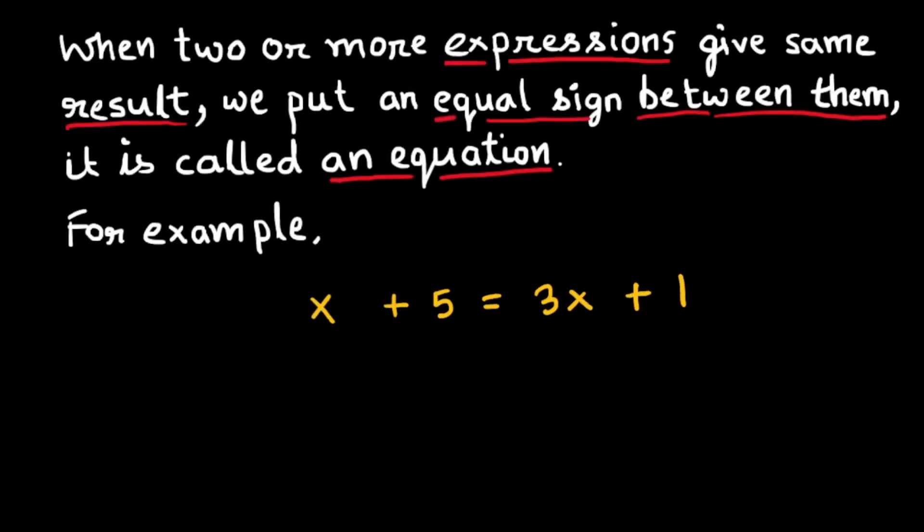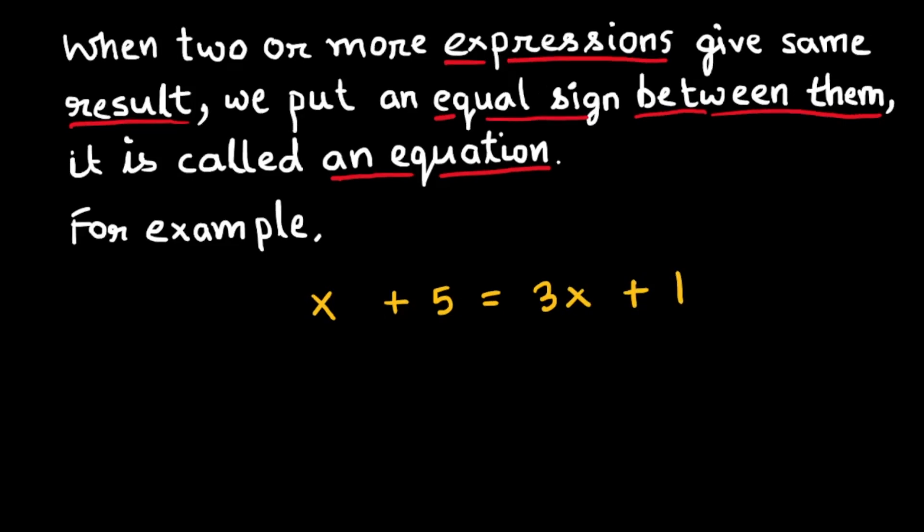For example, x plus 5 is equal to 3x plus 1. If x is equal to 2, then both sides of the equation will evaluate to 7, which means 7 equals 7. That's why it is an equation.